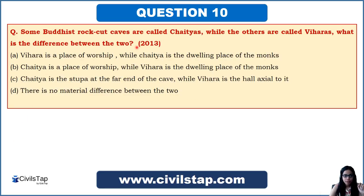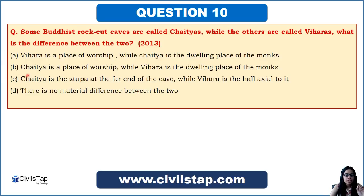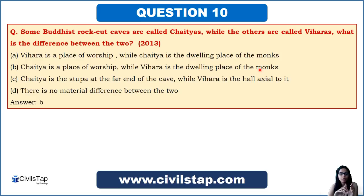This question came in the Prelims of 2013: 'Some Buddhist rock caves are called Chaityas while others are called Viharas — what is the difference between the two?' This is explained in every book on Buddhism and Jainism. Chaityas were places of worship in Buddhism, while Viharas were the dwelling places of Buddhist monks. So the answer is option B. These differences are explained in detail in Lecture 2 — watch that lecture carefully to solve many such questions.